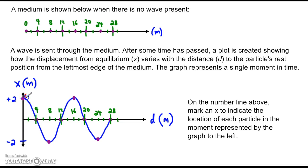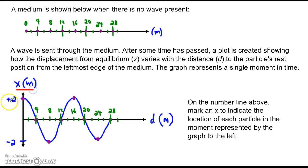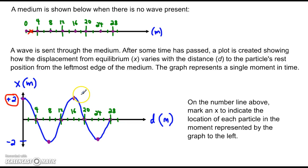Let's start at the beginning. The x-value is zero, d equals zero. This point on the graph is describing the particle with the rest position of zero — I just boxed it. That particle, with rest position zero, has a displacement — a y-value — of positive two. That means we need to take this particle and move it two meters to the right. It's been displaced two meters to the right.